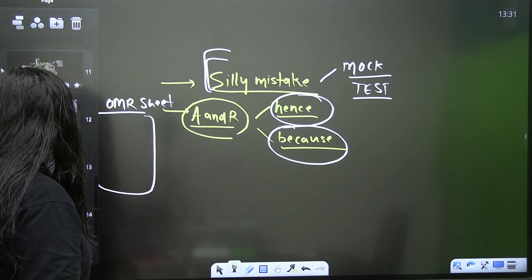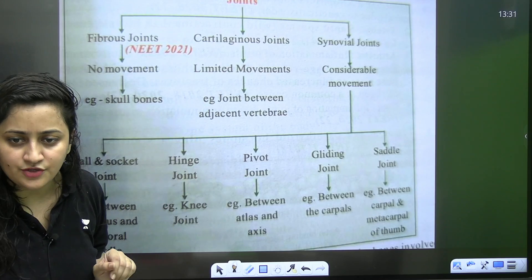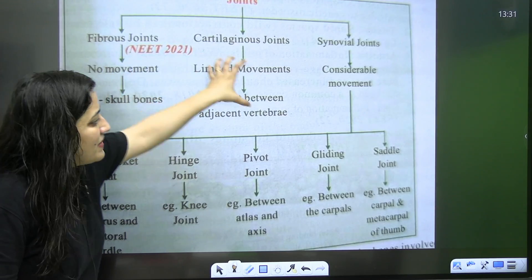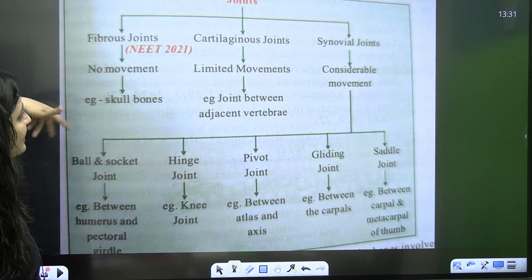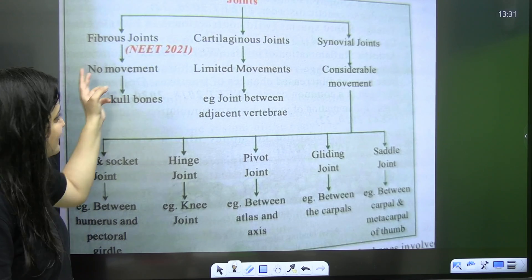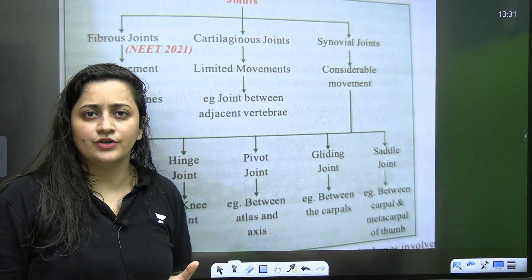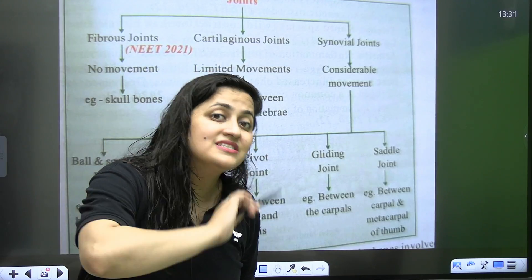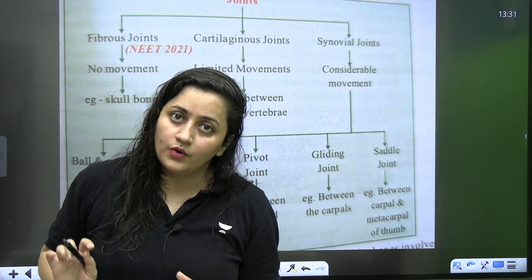For an example, if I talk about the topic of joints. See, most of the time, you used to get question from this part. What if you make proper flowchart of it? What if you revise this flowchart again and again? Like the examples of the joints here. You are definitely going to get that question. So, please focus on notes making as well. Because at the end, this is what going to help you.